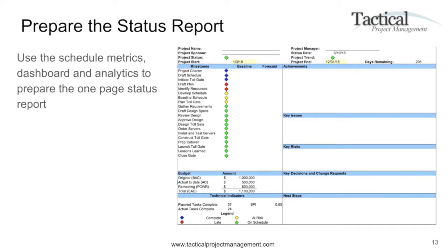The next step is to prepare the status. Now you have objective metrics identified — you're able to track the budget, use technical indicators to determine how many tasks were supposed to be completed versus how many were actually completed, and it calculates a rough scheduled performance index. There's also room for achievements, a summary of key issues and risks, key decisions, change requests, next steps, and a milestone section showing baseline versus forecast to indicate if you're on target or behind.